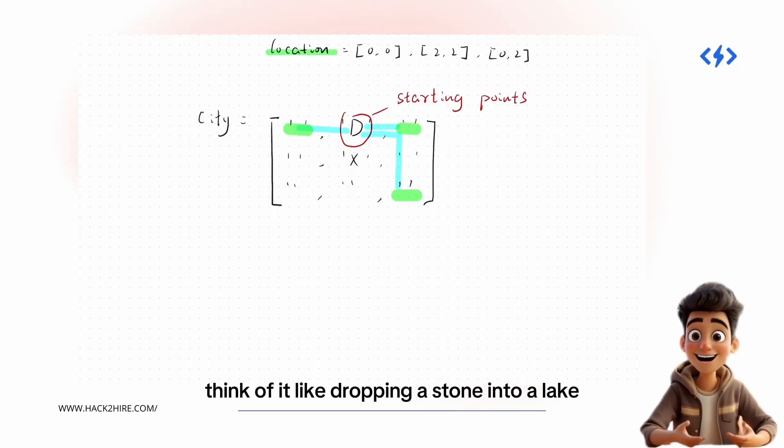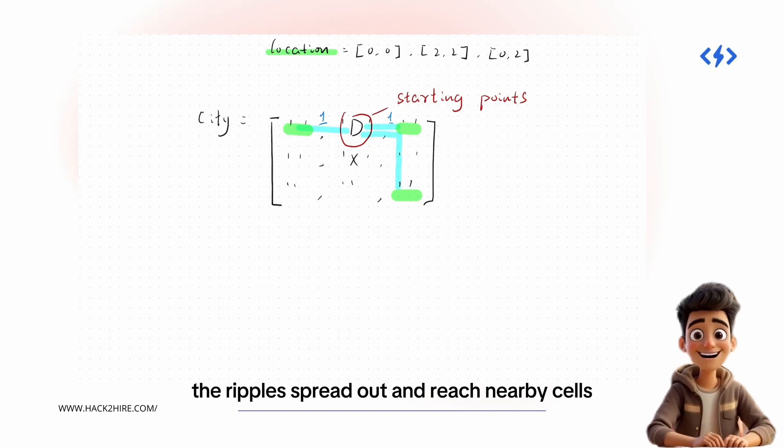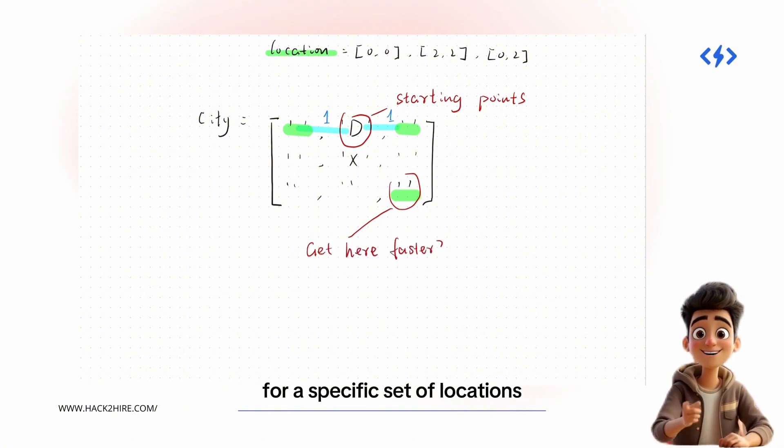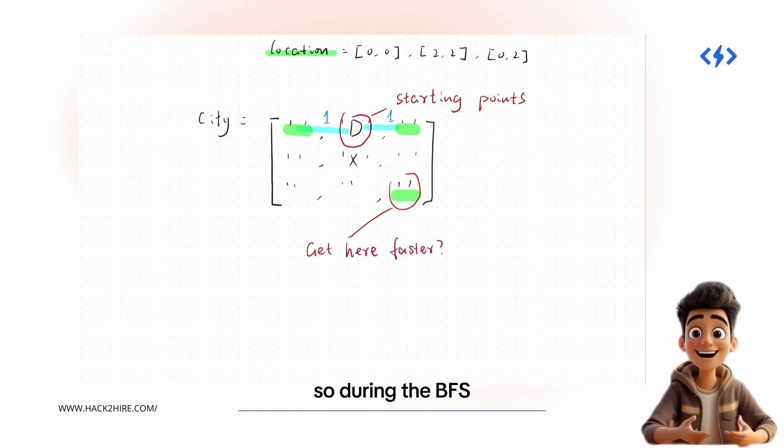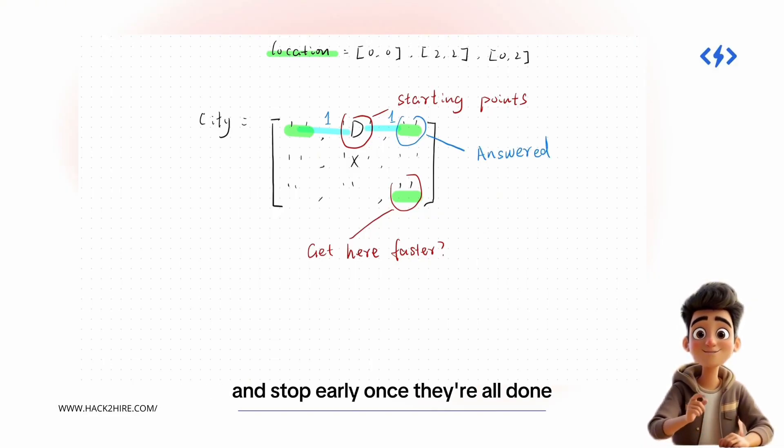Think of it like dropping a stone into a lake from every dashmart. The ripples spread out and reach nearby cells. Want to go even faster? We only care about distances for a specific set of locations. So during the BFS, we track which locations have been answered and stop early once they're all done.